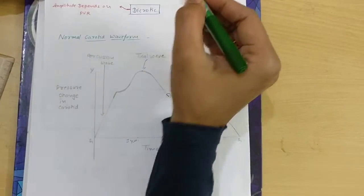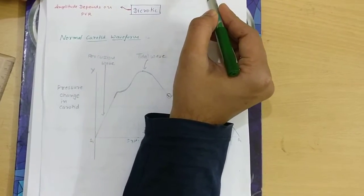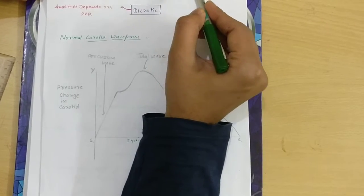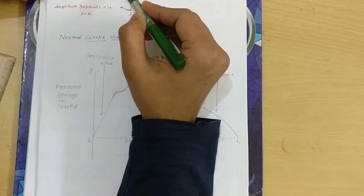Then the tidal wave is produced by volume transmission, which is blood volume transmission into the carotid.